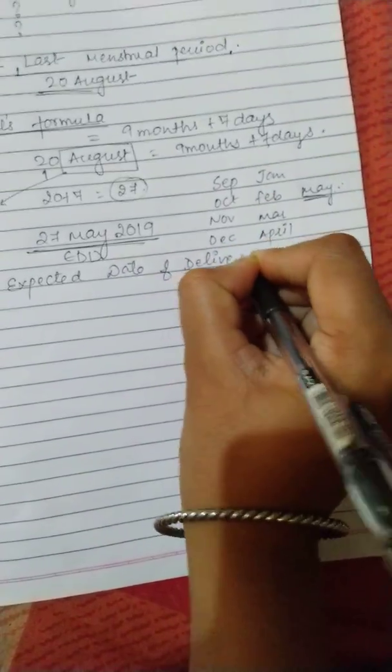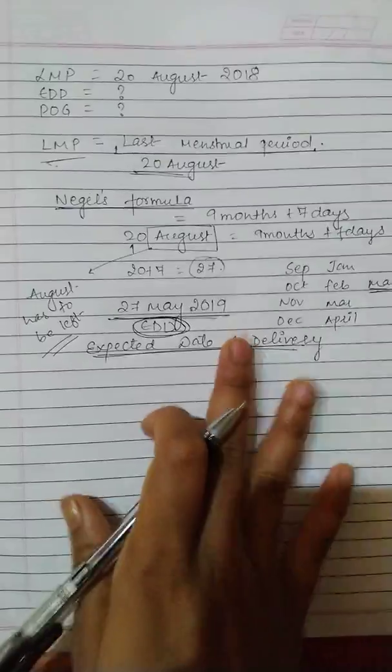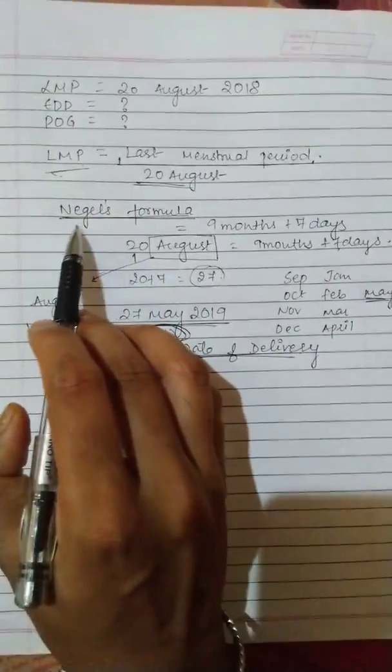EDD is what? Expected date of delivery. So EDD is nothing but expected date of delivery. So this is the method from which we calculate LMP by using Nigel's formula.